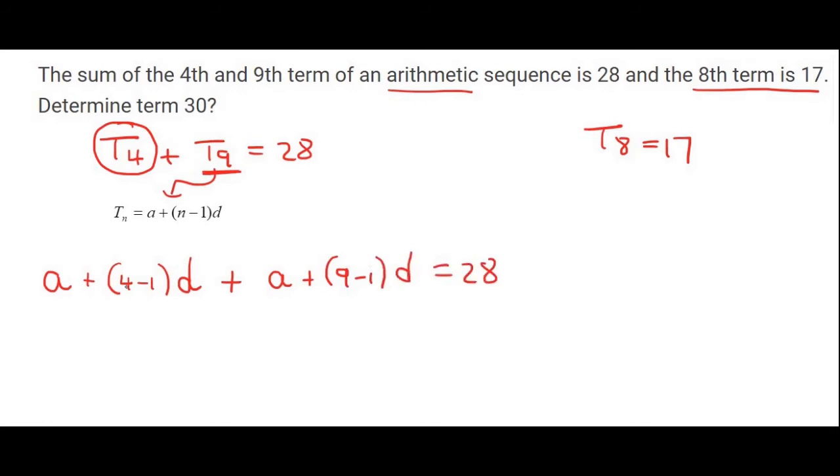We could then simplify a little bit. So that would be A plus 3D plus A plus 8D equals 28. Further simplification means that 2A plus 11D equals 28. We can't go any further because we have two unknowns.